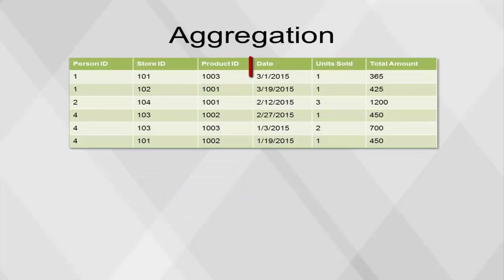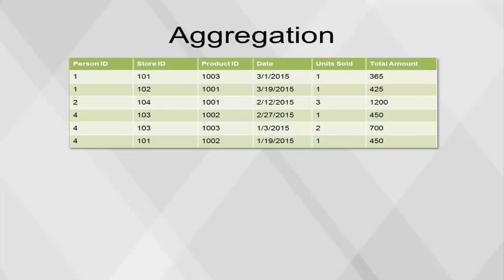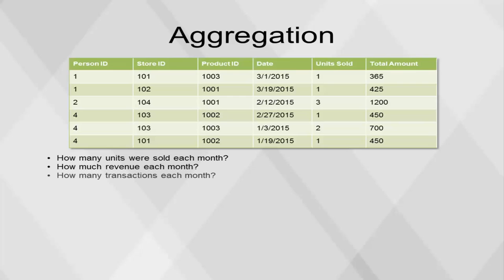The final example uses the month and year components of the date field to calculate all possible levels of aggregation. How many units were sold each month? How much revenue each month? How many transactions each month? What was the average price? How many distinct products were sold each month?